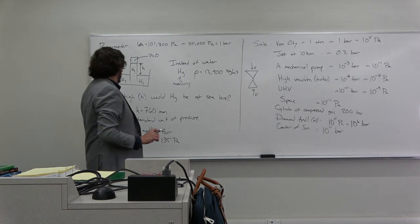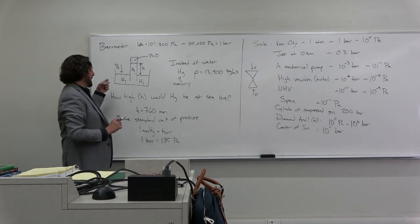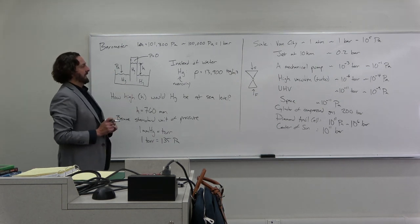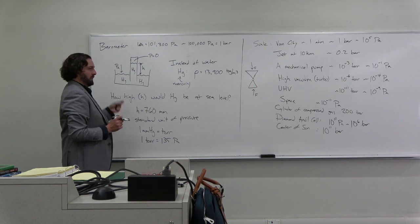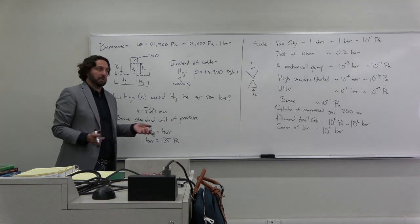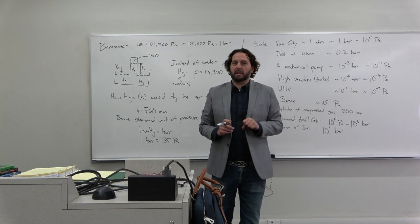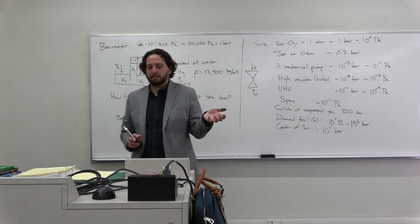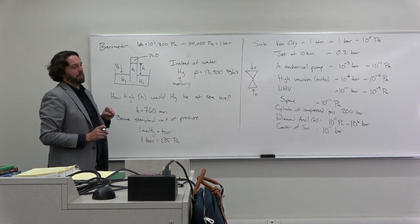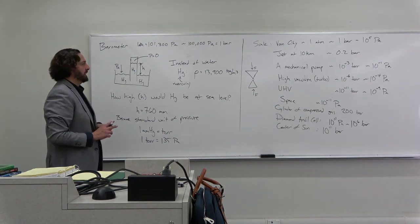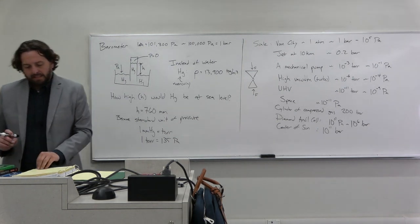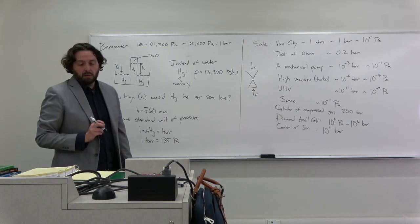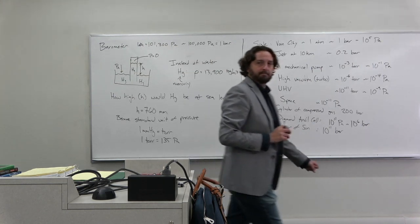One question you might think about: if I take my barometer, measure the pressure at sea level, then move it to Edmonton at a different temperature — how does this system change with temperature? Should I worry about the temperature dependence of mercury? Wouldn't that change the density? Next time, in lecture 2.3, we're going to talk about temperature. Until then.